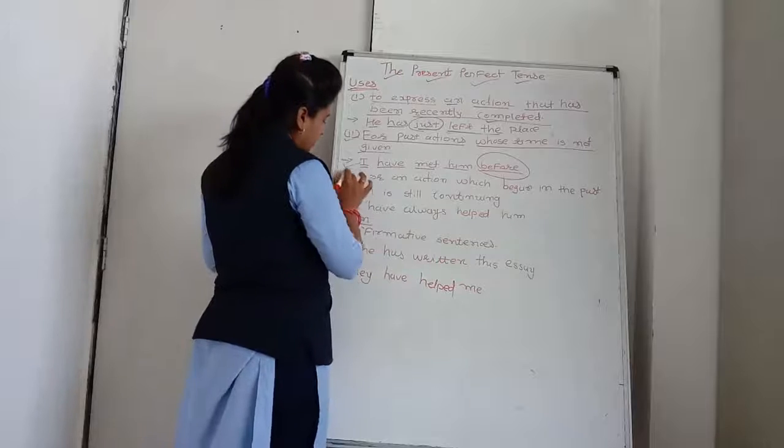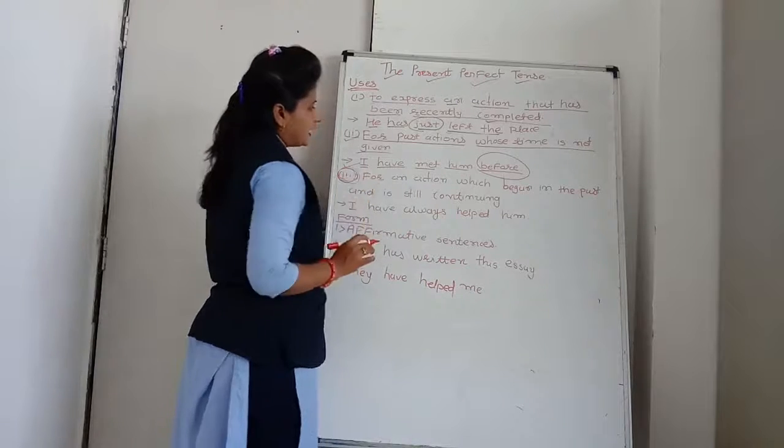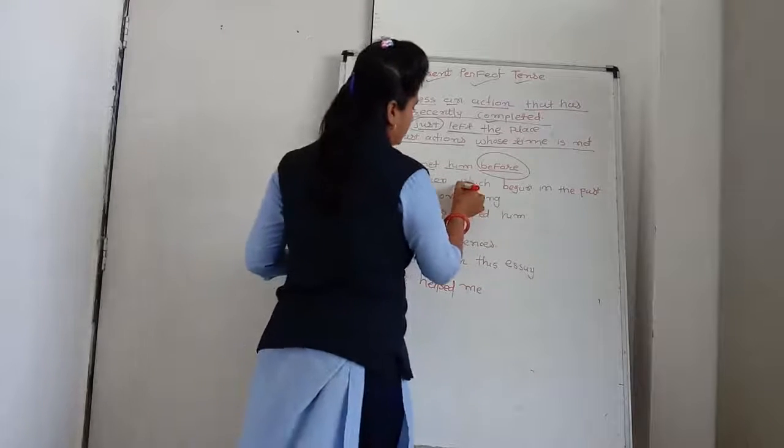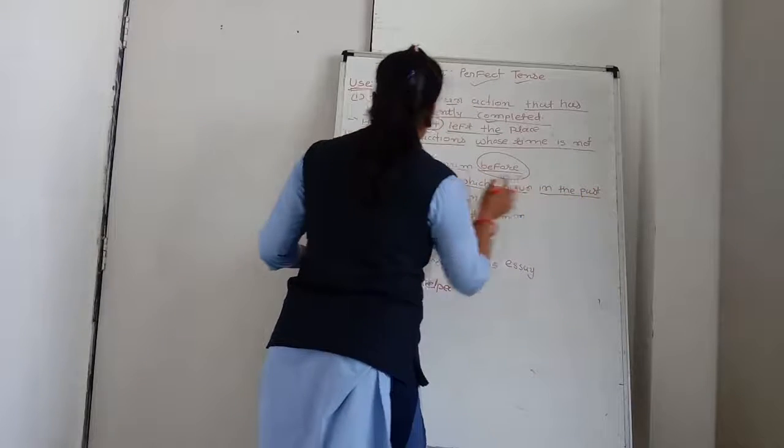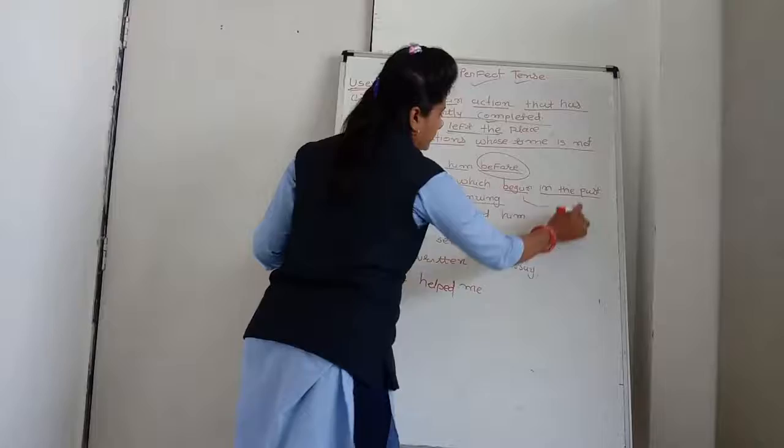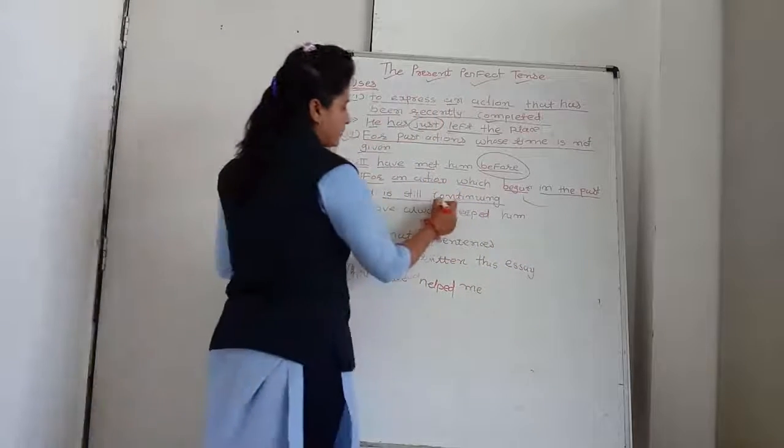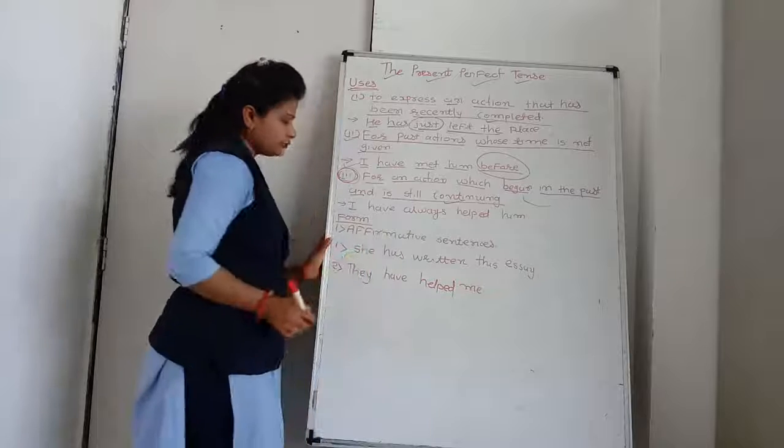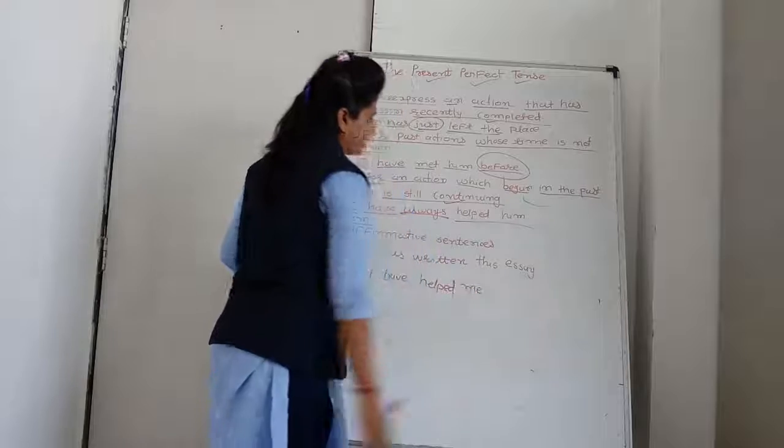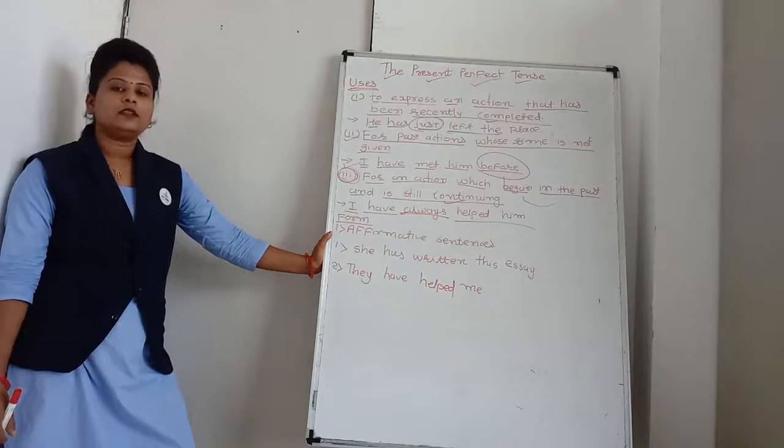Third use of this tense. The present perfect tense is used for an action which began in the past and is still continued. Action starts in the past and will continue. For example, I have always helped you.